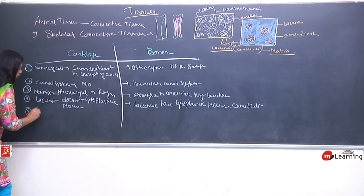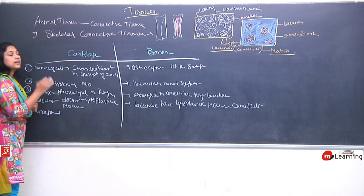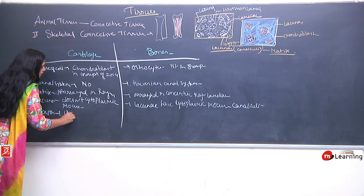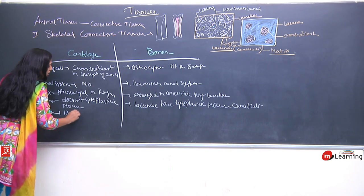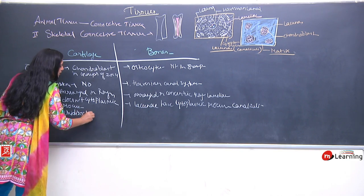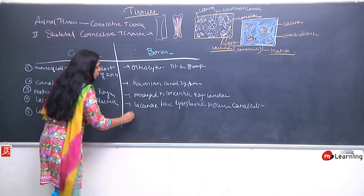Regarding growth: cartilage grows in a unidirectional manner — ek hi disha mein — whereas bones have bi-directional growth.